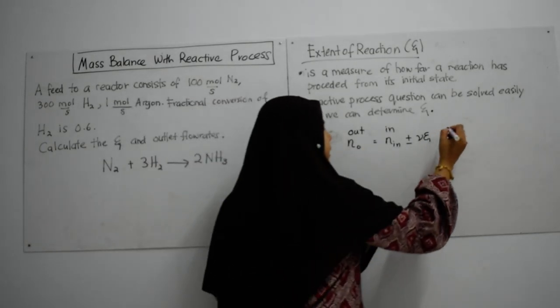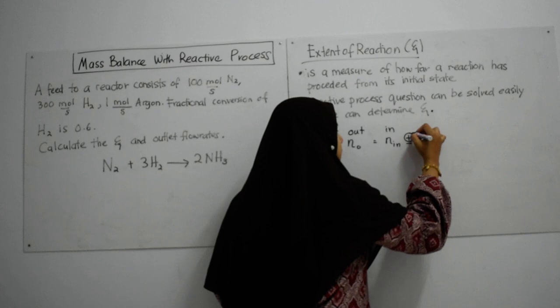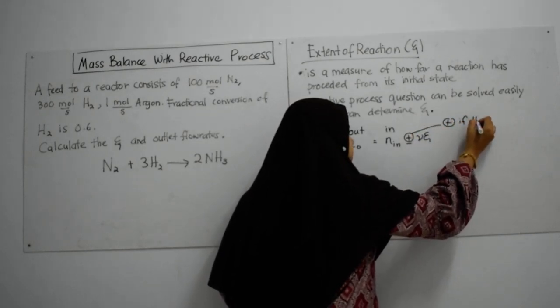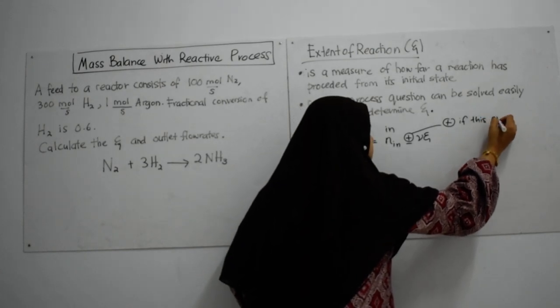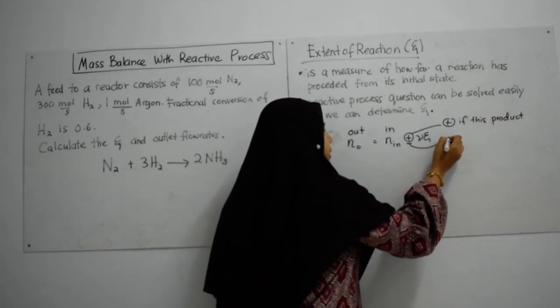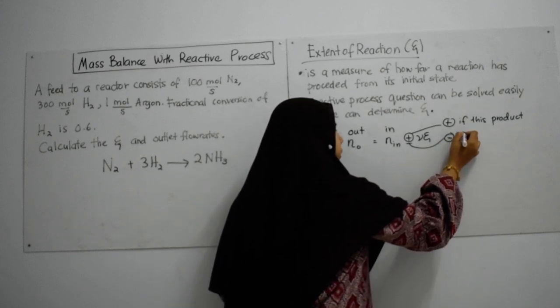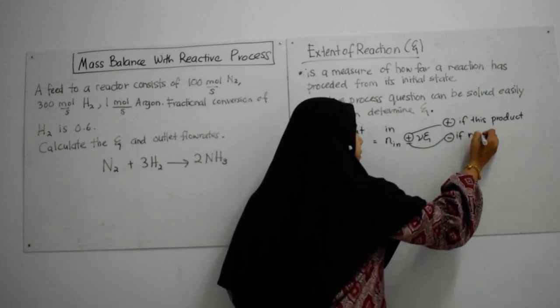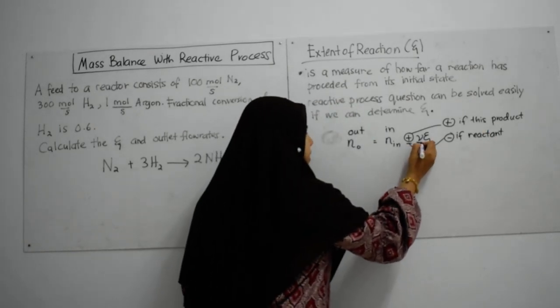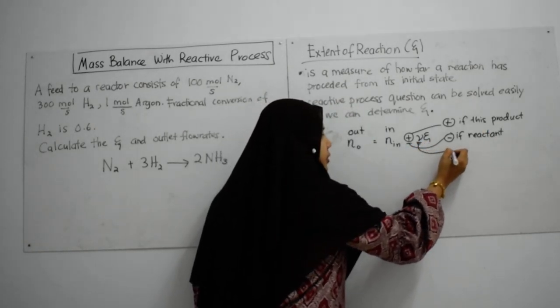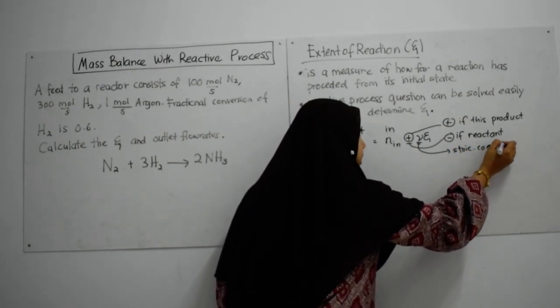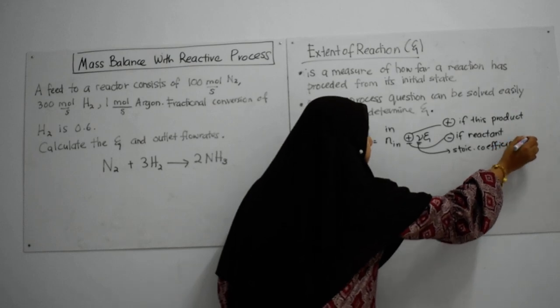It will become plus if this is product. It will become negative if reactant. This is, again, the stoichiometric coefficient in your equation.